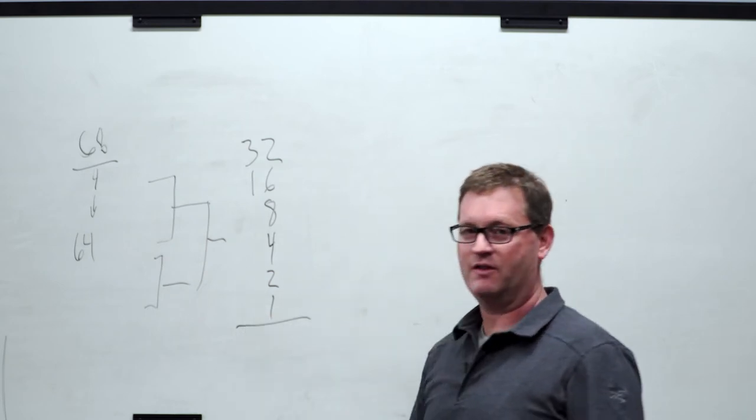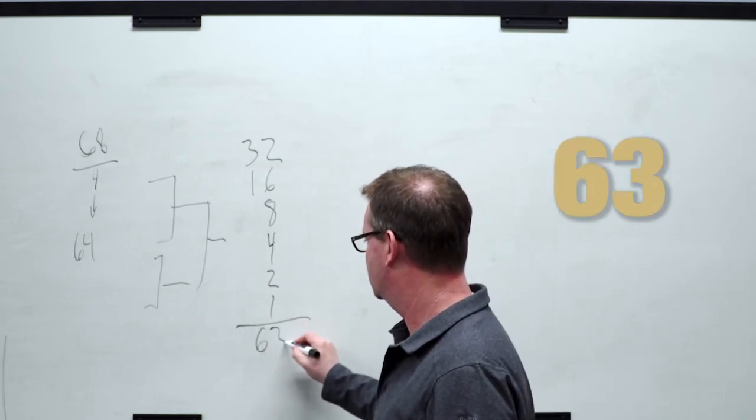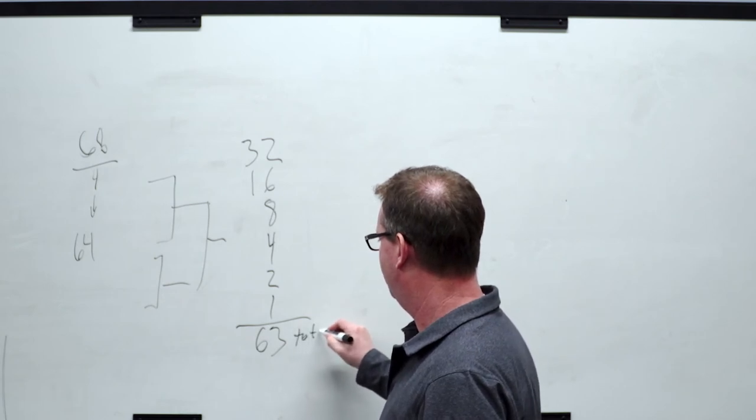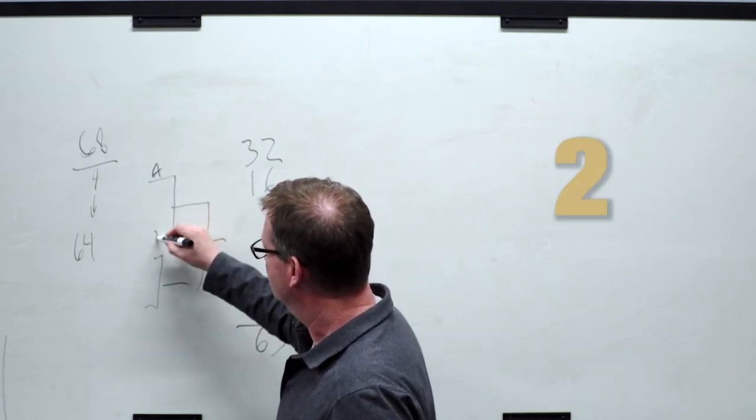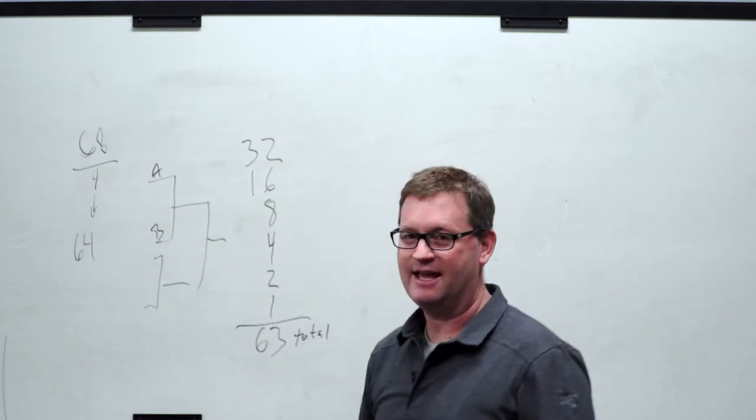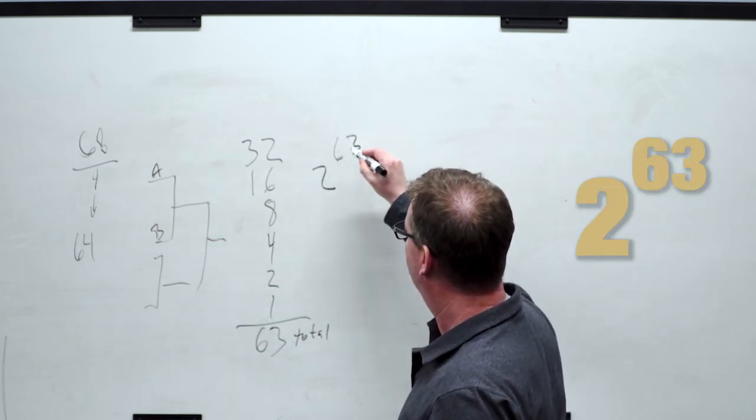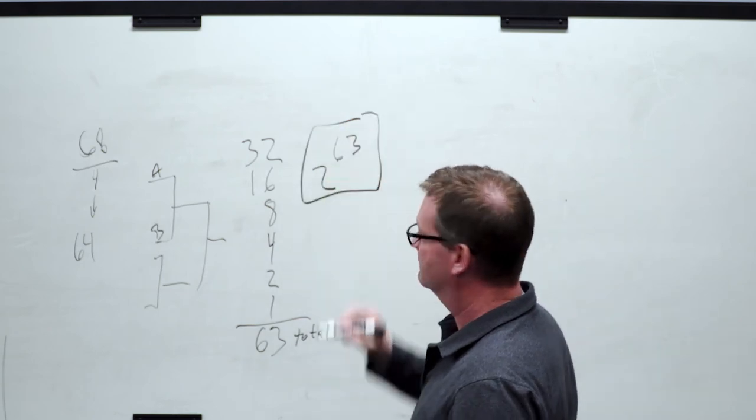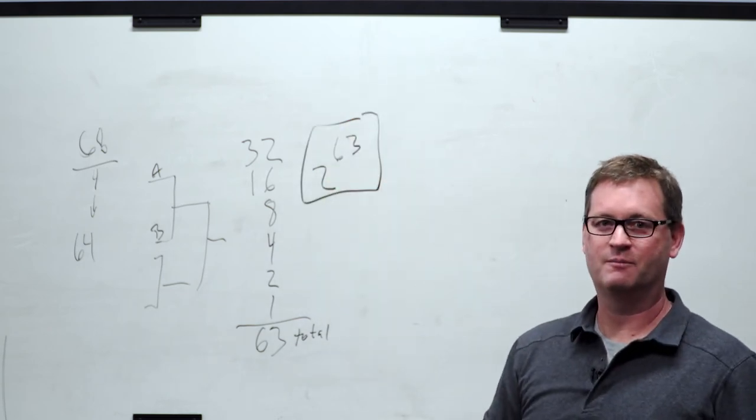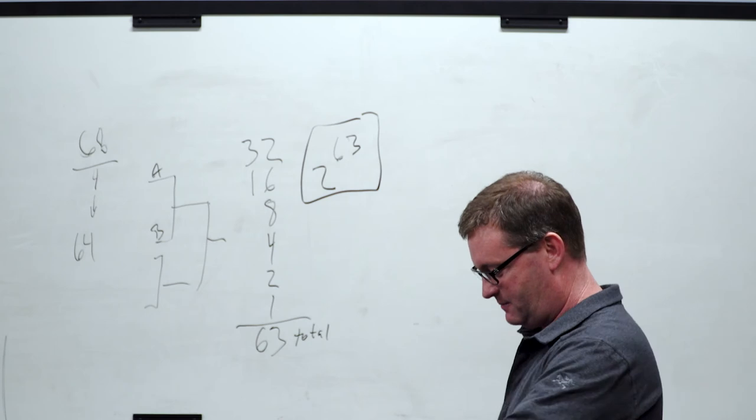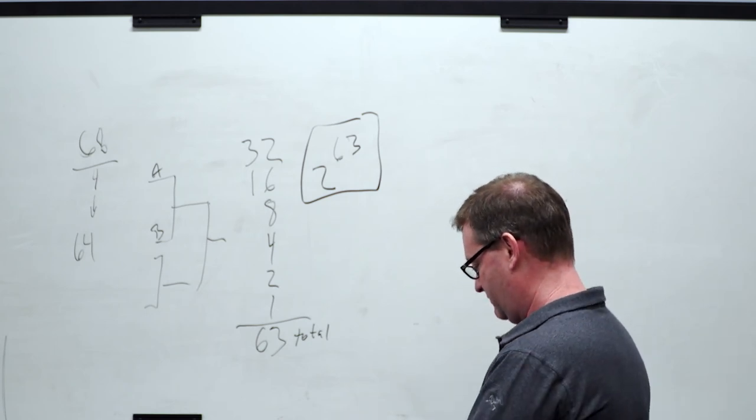If we add up all these outcomes, there's 63 total games. Because there are two outcomes for each game in the tournament, that gives us two to the 63rd possible combinations of brackets that are out there. That's a big number, and I'm going to write it down for you.